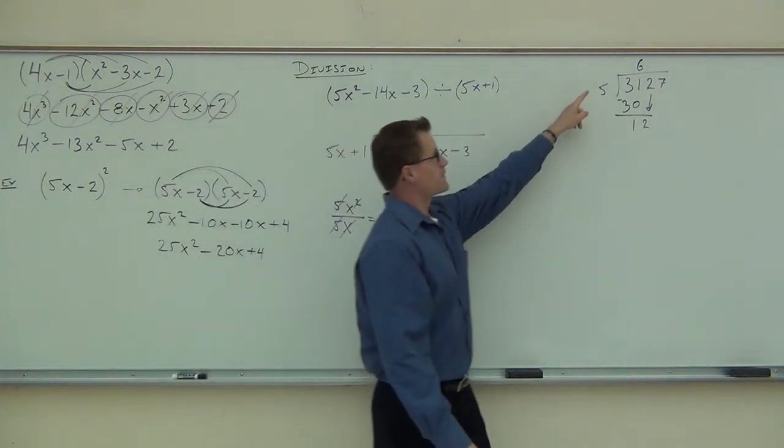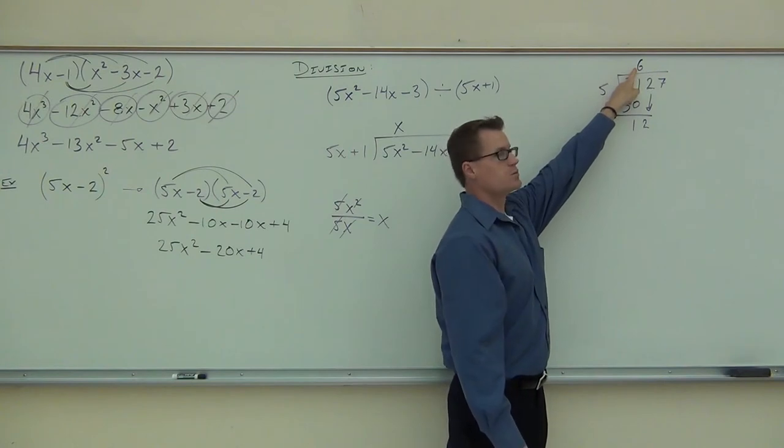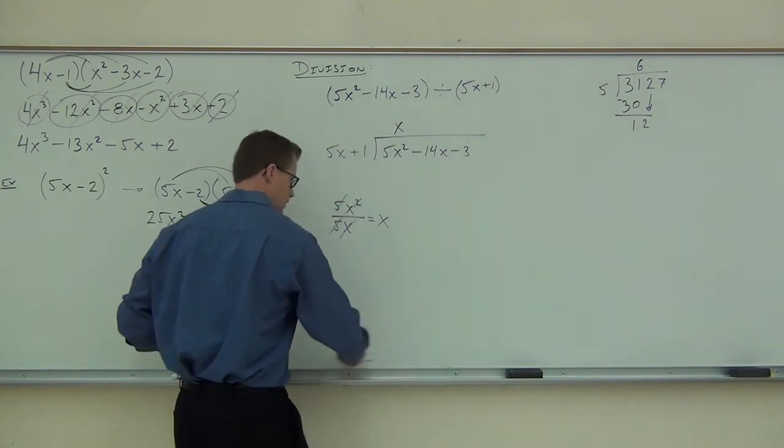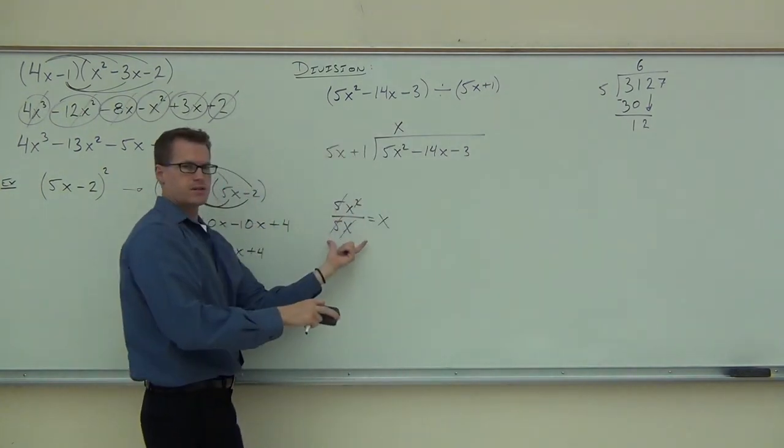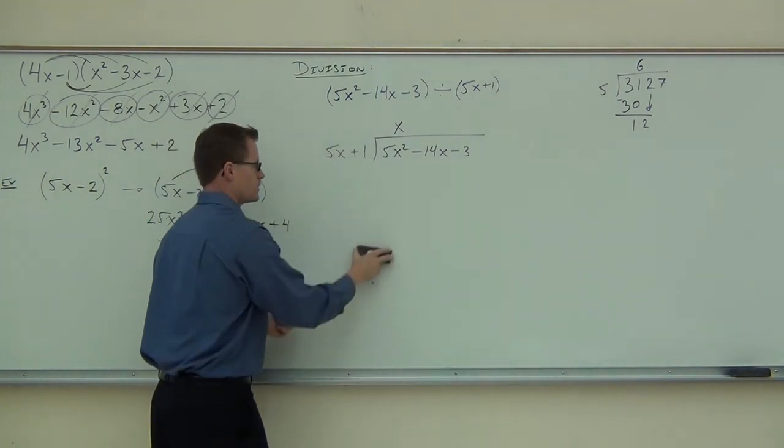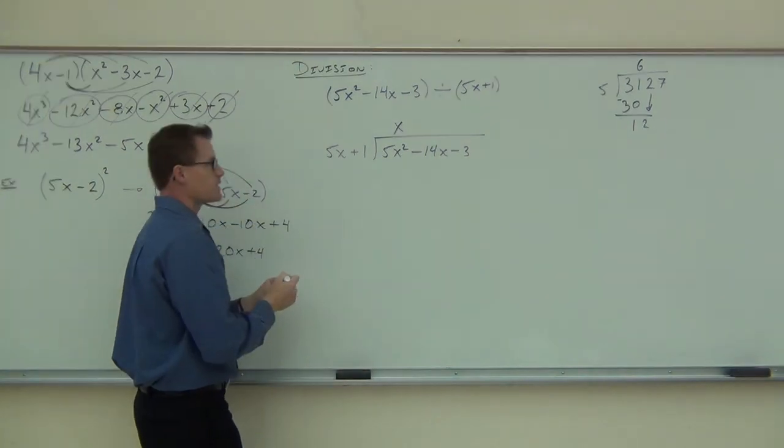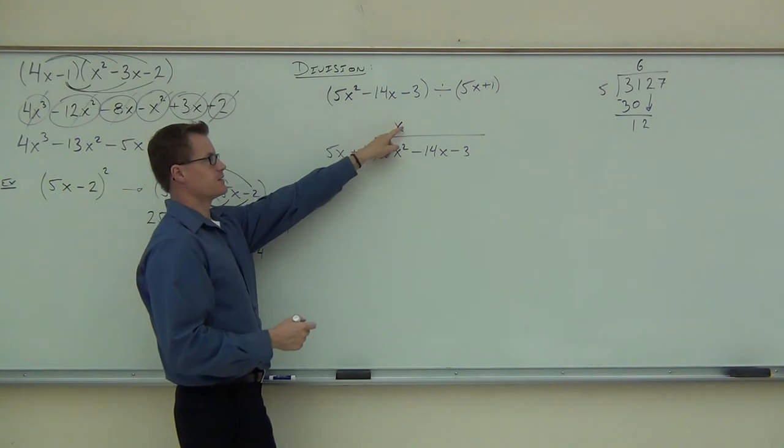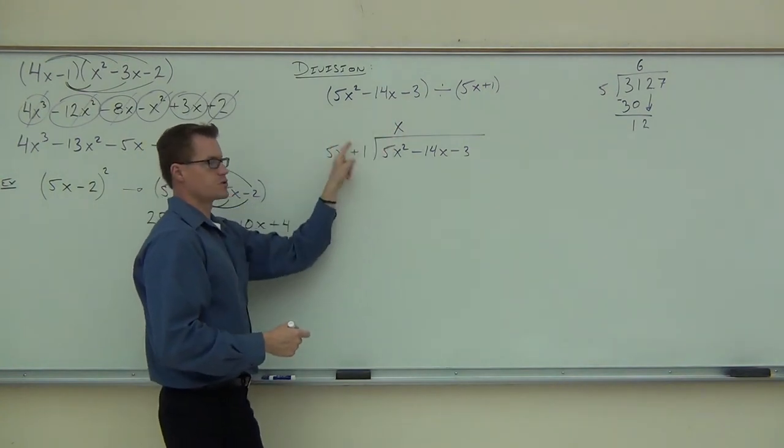Now, we're at this step right now. The next step was to multiply, right? Multiply the 6 times 5. You're going to do the same thing here. Can I erase this? You can do the same thing here, but watch. When you multiply, do you see that it is a distribution problem?